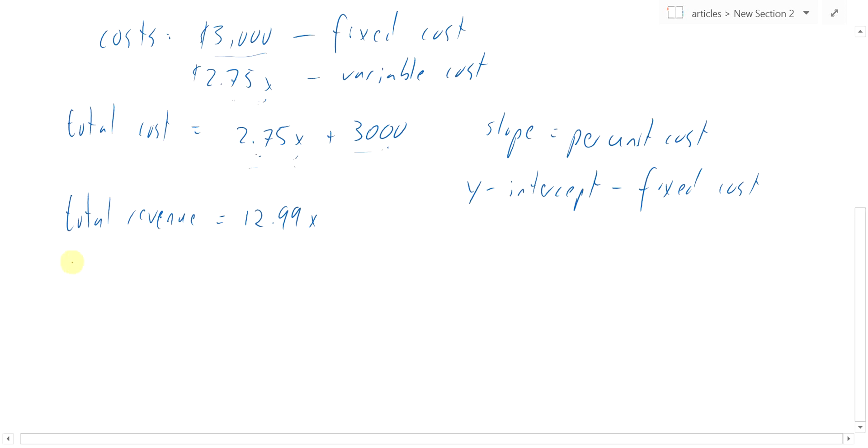So break-even. What's a break-even point? Well, that's where your total cost equals your total revenue. Another way to think about this, this is where you're making no profit. You're not making any money, but on the other hand, you're not losing any money. So, since we have these nice equations now, we know the total cost is this, $2.75x plus $3,000. And then total revenue is $12.99x.